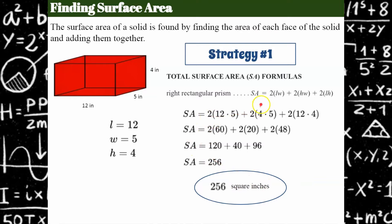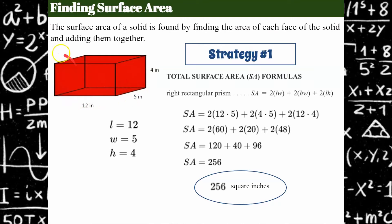Now let's talk about why there are twos in the formula. This face, 4 by 5, is also over here 4 by 5. The bottom is 12 by 5, which means the top is also 12 by 5. The front and back faces are 12 by 4. So with a rectangular prism, you have six faces and three pairs of two faces that all have the same measurement. That's why this formula works.